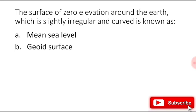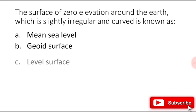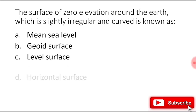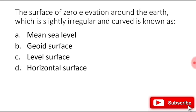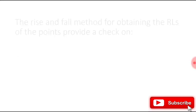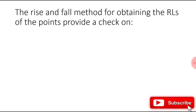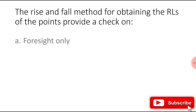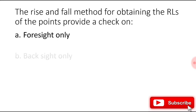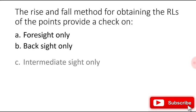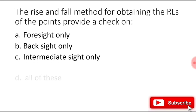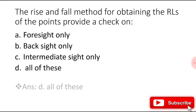The surface of zero elevation around the earth, which is slightly irregular and curved, is known as: mean sea level, geoid surface, level surface, or horizontal surface? The right answer is geoid surface. The rise and fall method for obtaining the elevations of points provides a check on: foresight only, backsight only, intermediate sight only, or all of these? The right answer is all of these.